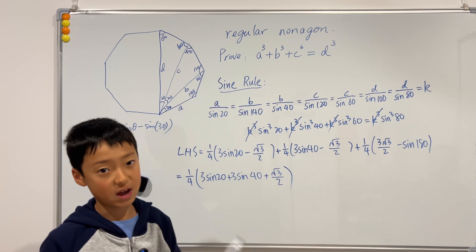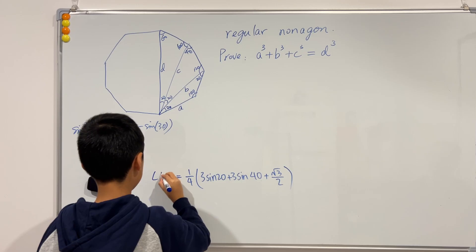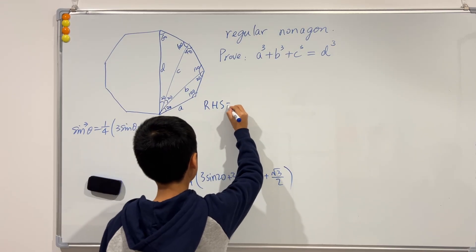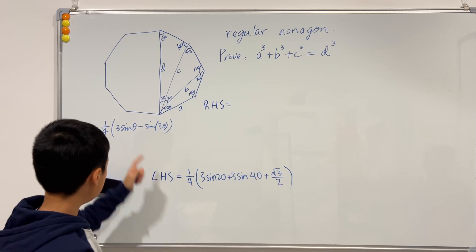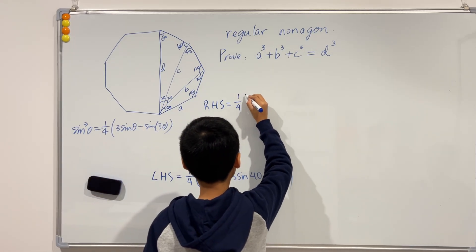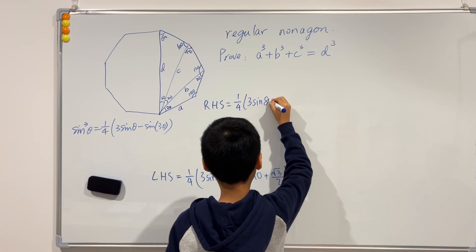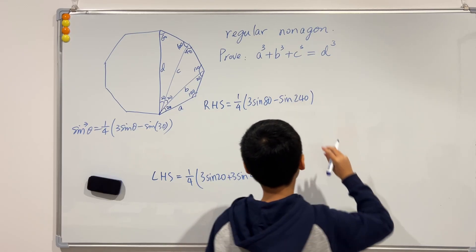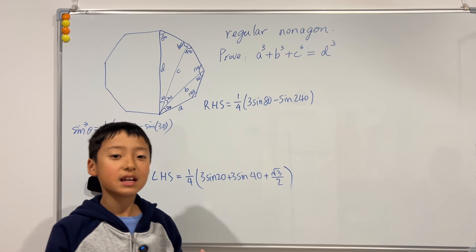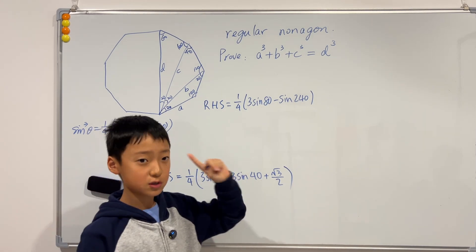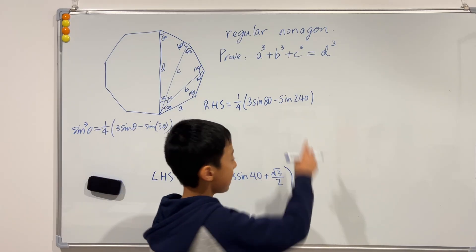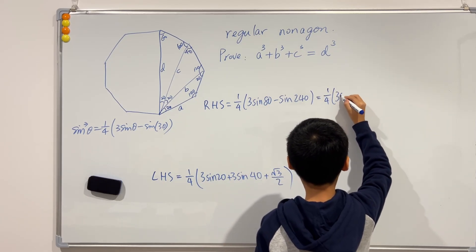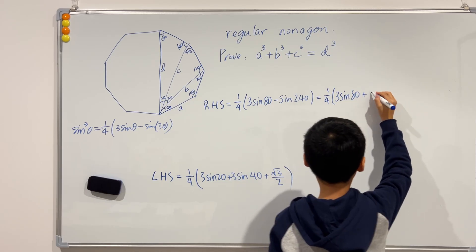So now why don't we try and deal with the right-hand side. So the right-hand side was sine cube of 80 and we can use this, 1/4, 3 sine of 80 minus sine of 3 times 80 which is 240. And we know that sine of 240 is negative sine of 60, so that is just negative square root of 3 over 2. And minus minus becomes plus, so this is just equal to 1/4, 3 sine 80 plus square root of 3 over 2.